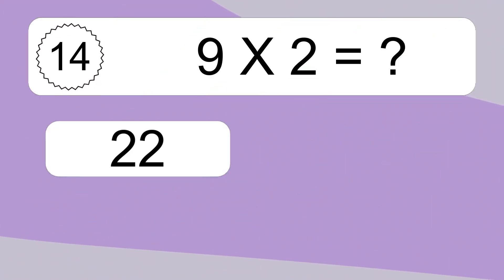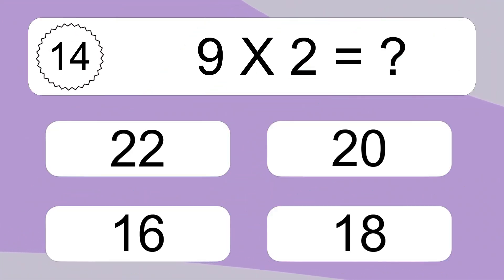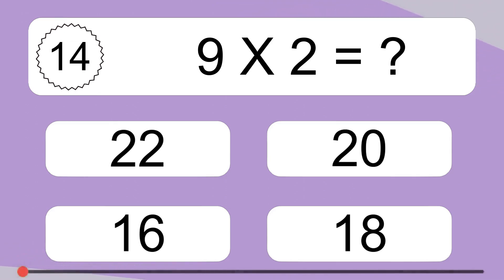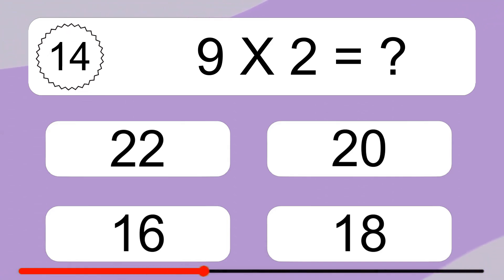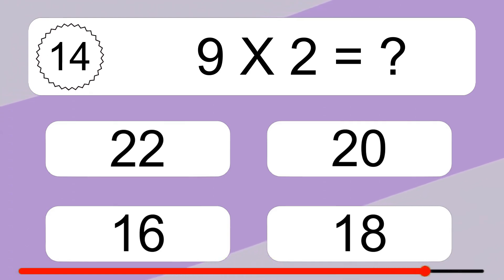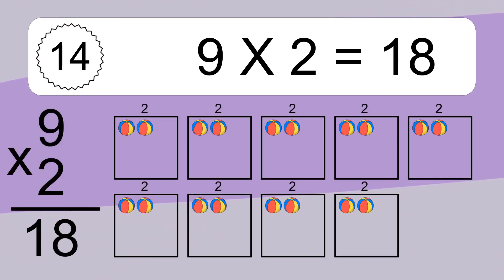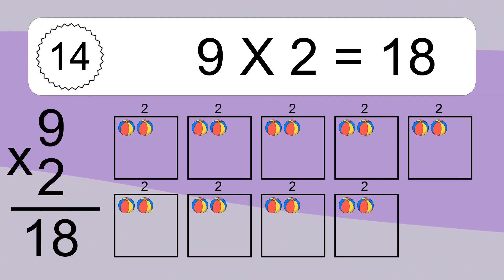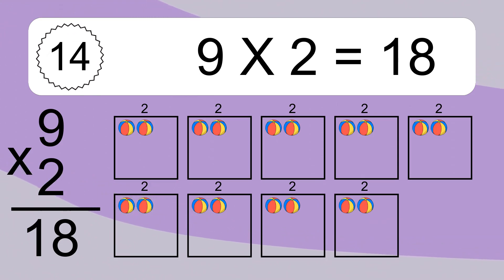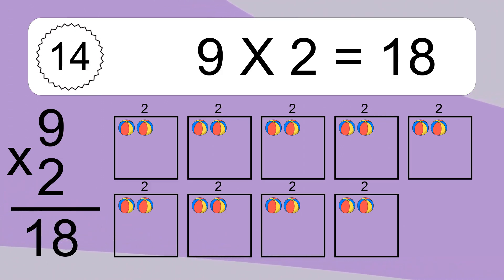9 x 2 equals what? 9 x 2 equals 18. We have 9 boxes, and each box has 2 colorful balls inside. If you count all the balls in all the boxes together, you will have 9 x 2 balls. This equals 18 balls.